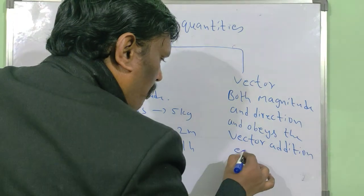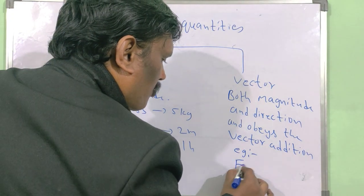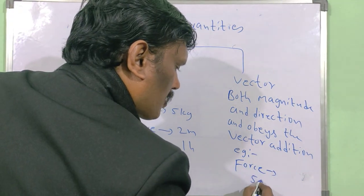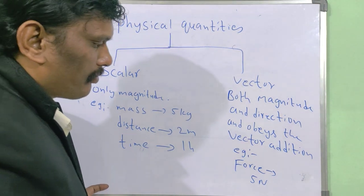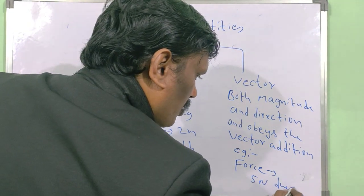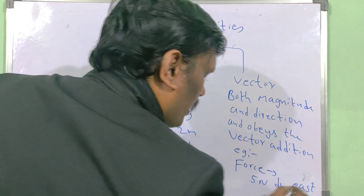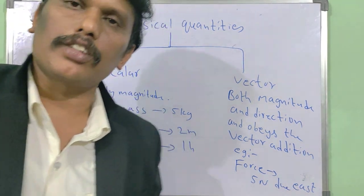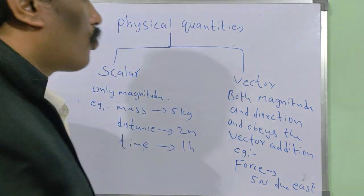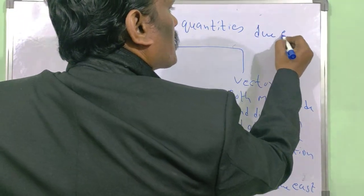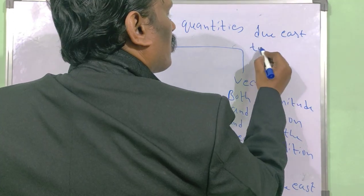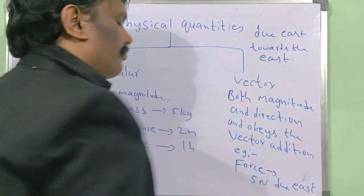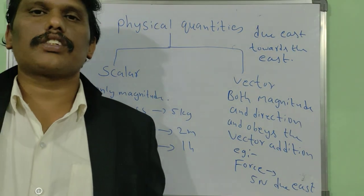For example, force is a vector quantity. It requires 5 newtons in a specific direction — for instance, due east means I need to apply 5 newtons towards the east. So force needs both magnitude (5 newtons) and direction (towards the east). This is the classification of physical quantities.